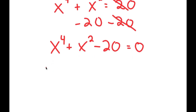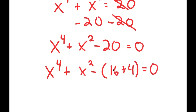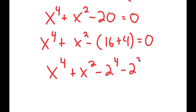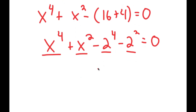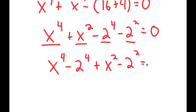To solve this, I'm going to rewrite it as x to the power of 4 plus x squared minus 16 plus 4, rewriting 20 as 16 plus 4. The reason I did this is because negative 16 is the same as negative 2 to the power of 4, and negative 4 is the same as negative 2 squared. So I get x to the power of 4 minus 2 to the power of 4, plus x squared minus 2 squared, equals 0.